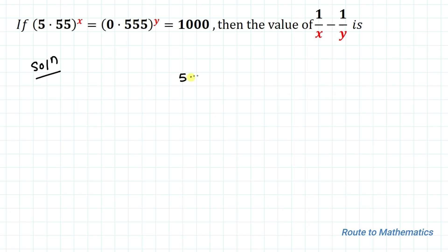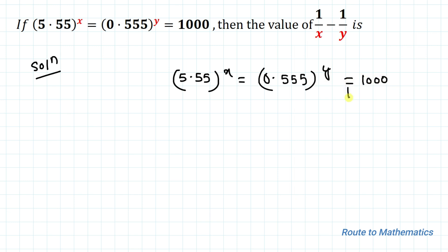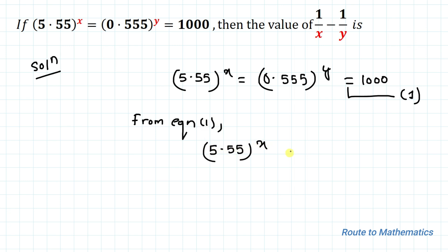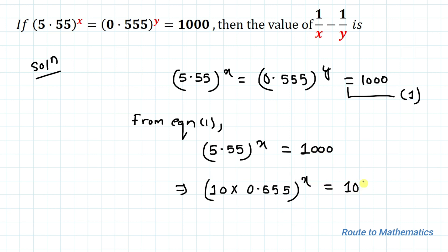So without any delay, let's start the solution. The given equation is 5.55 to the power x equals 0.555 to the power y equals 1000 — let's call this equation 1. From equation 1, we can write 5.55 to the power x equals 1000. We rewrite 5.55 as 10 multiplied by 0.555, so (10 × 0.555)^x equals 10 cubed.